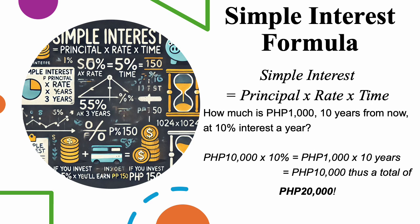The formula for simple interest is straightforward: Principal times rate times time. If you invest P1,000 at a simple interest rate of 5% per year, you will earn P50 per year. The amount of interest remains the same each year because it is calculated only on the original amount.